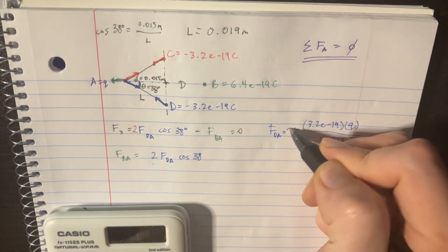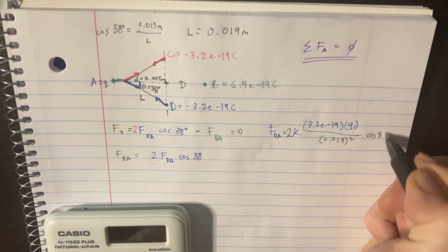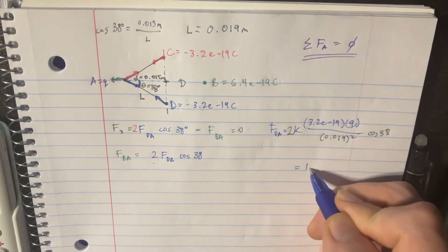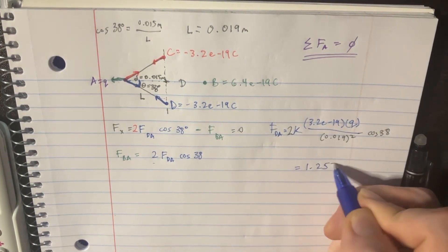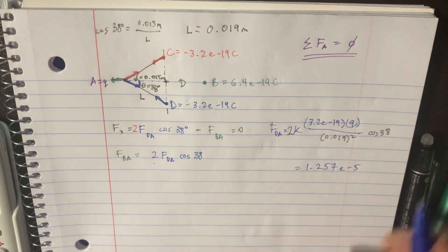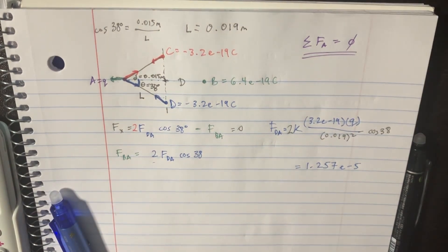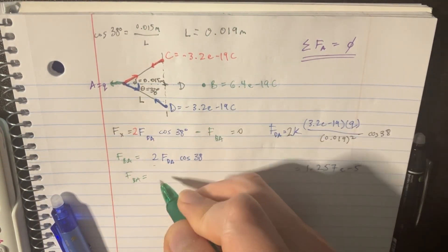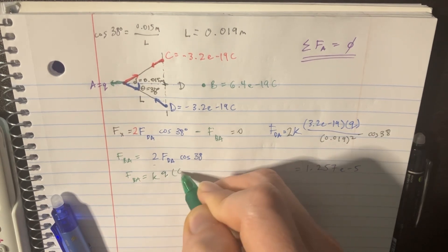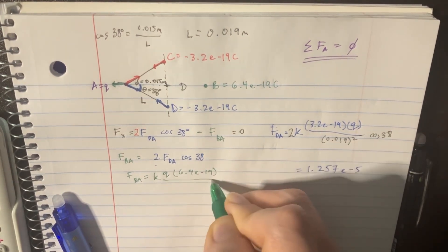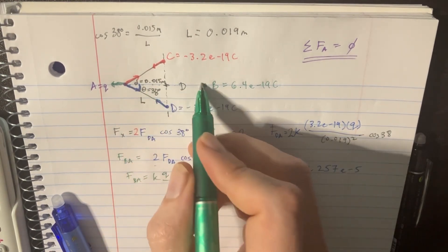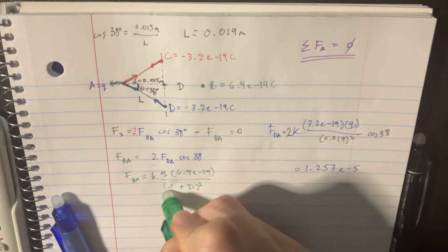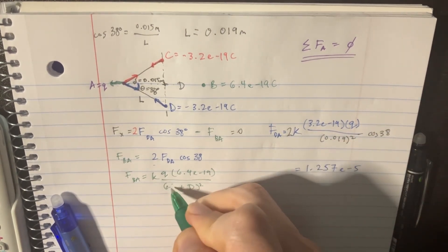And let's go ahead and do our times 2 and our cosine 38 here so we don't mess that up. This is 1.257 e to the negative 5. And then we can figure out what FBA is. So let's do that right here. That is simply going to be K times Q times 6.2e to the 19 there, divided by D plus D. It's little D plus big D squared. I have to know what the little D is. It's going to be 0.015.